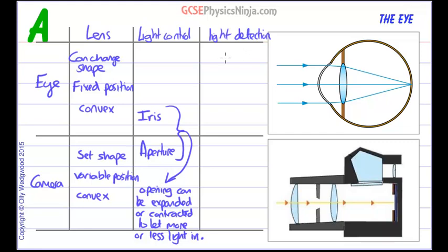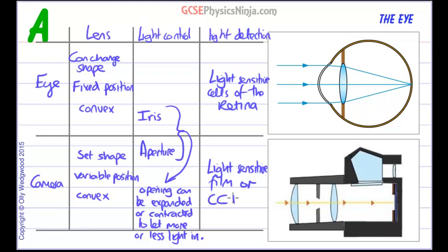Light detection. The eye uses the light sensitive cells of the retina. Sensitive cells of the retina. And the equivalent is the light sensitive film or charged coupled device CCD.